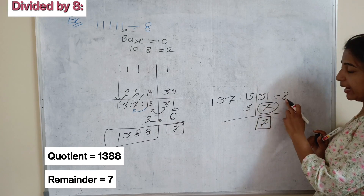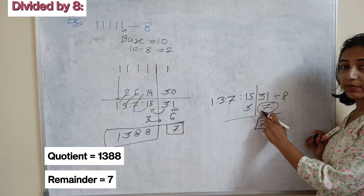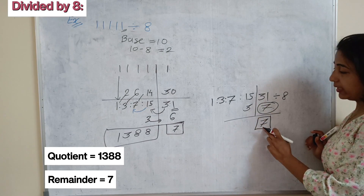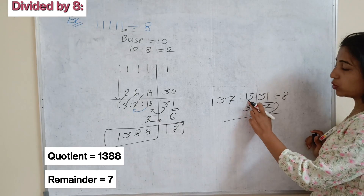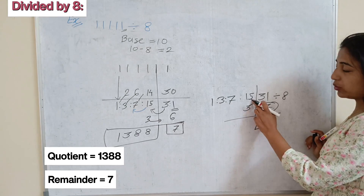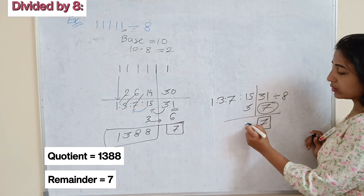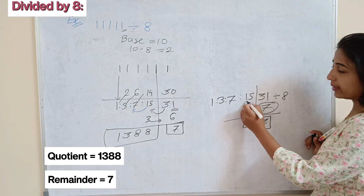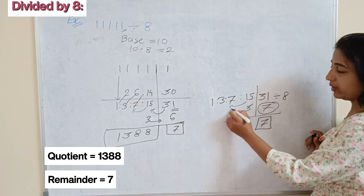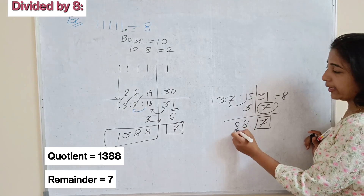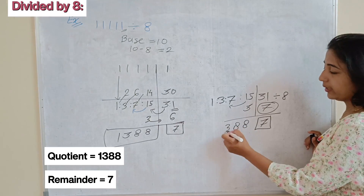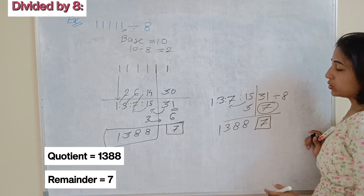So 7 will be our remainder when dividing 31 by 8, and quotient 3 you add to the quotient part: with 15 that gives 8. So the result reads 8, 3, 1 — that is 13810 quotient with remainder 7.